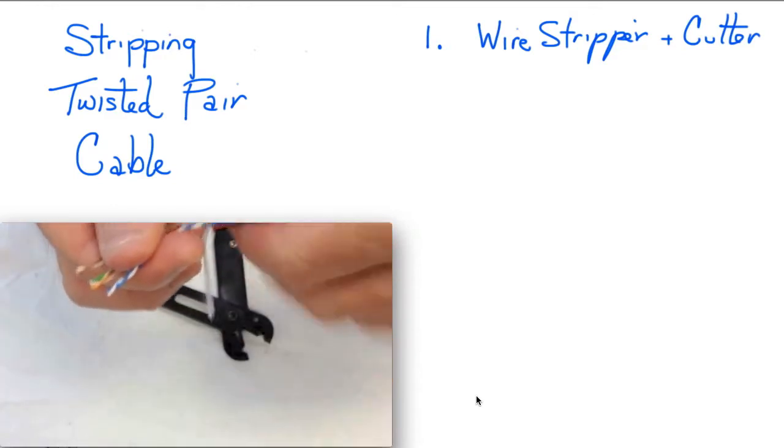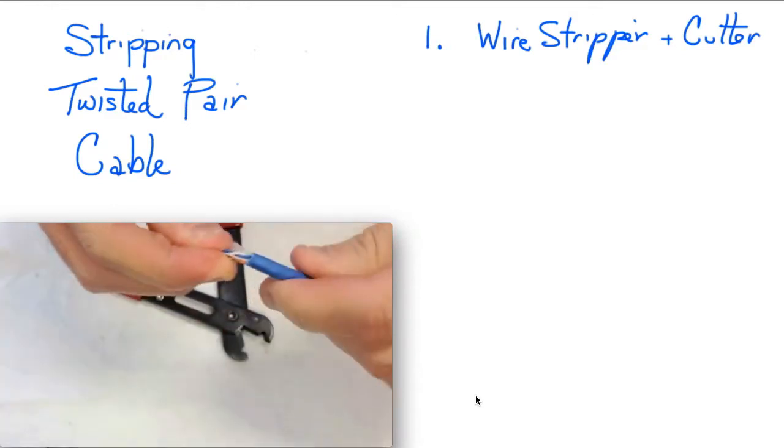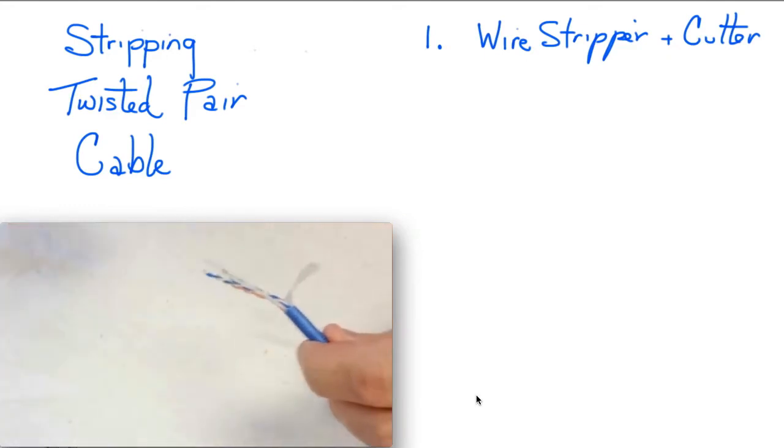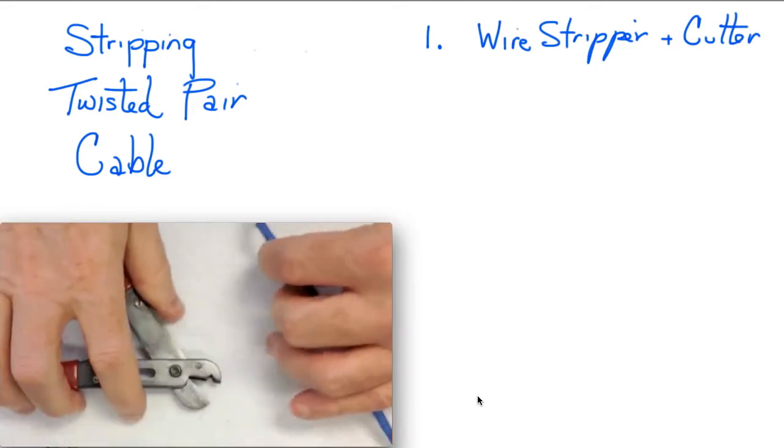You'll also notice here that there's a couple white elements. One is for strength and one is called a ripcord. So we just cut those off later.